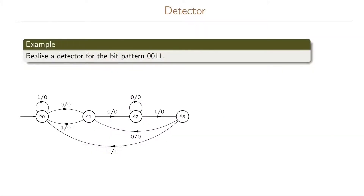In this example we're going to realize the sequential circuit for our detector problem. Recall that we wanted to realize a detector for the bit pattern 0011, so that when we have detected this pattern incoming to our circuit we will output a 1.